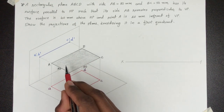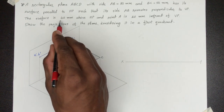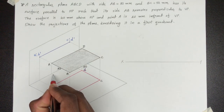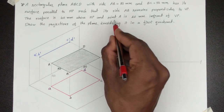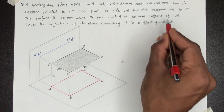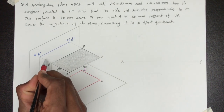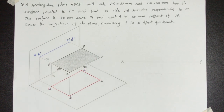This surface is parallel to HP and is 40 mm above the horizontal plane — this distance is 40 mm. Point A is 20 mm in front of VP, so this distance is 20 mm.